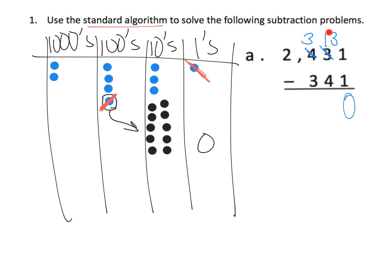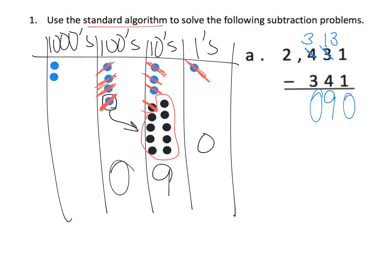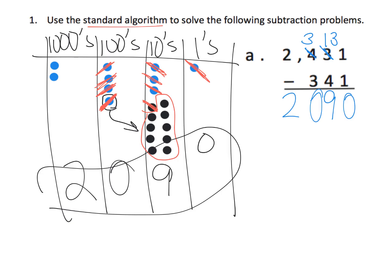With those 13 tens, we take away 4 — that gives us a remainder of 9. So in our standard algorithm, 13 minus 4 is 9. Now in the hundreds column: 3 hundreds take away 3 hundreds, removing 1, 2, 3 — that leaves us with no hundreds. So 3 hundreds take away 3 hundreds is 0 hundreds. Then 2 thousands take away nothing leaves us with the original 2 thousands. So our answer is 2,090, and that's exactly what we have in the standard algorithm as well.